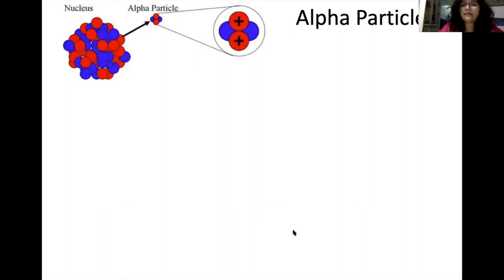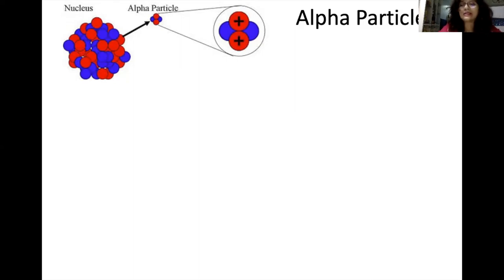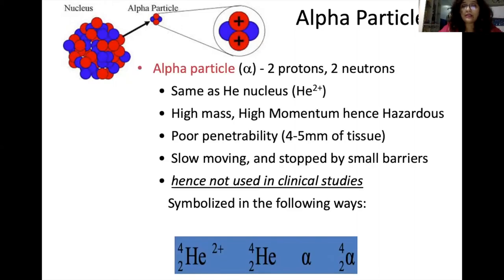The alpha particle is positively charged, made up of protons and neutrons. As it has more mass, it has more momentum, and that is why it is not used in medicine — it damages surrounding tissue more. Because of their high mass, alpha particles have poor penetrability. They can only pierce through 4 to 5 mm of tissue and are stopped by small barriers. Hence alpha particles are not used in clinical study.